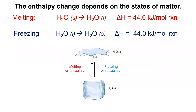Lastly, the enthalpy change depends on the states of matter. The process of solid ice melting to liquid water requires 44 kilojoules per mole. The reverse process — freezing — requires the exact opposite amount of energy: it gives away 44 kilojoules per mole.